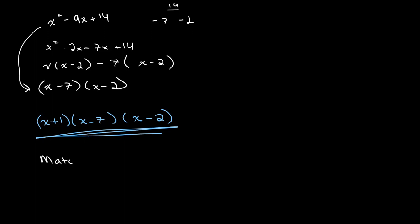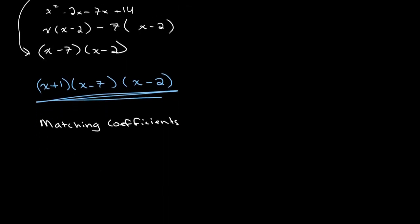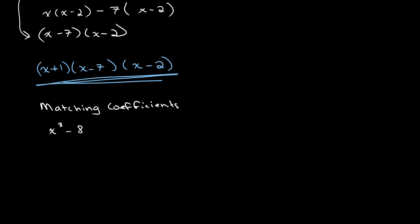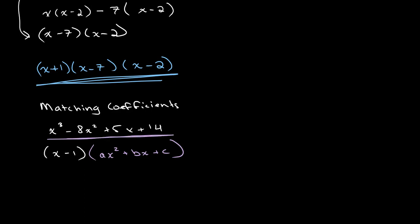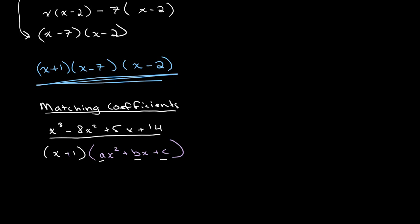Method 3 is matching coefficients. We have x³ − 8x² + 5x + 14 with known factor x + 1. We know that (x + 1) times some quadratic ax² + bx + c equals our expression. What we want to do is match the coefficients a, b, and c with the coefficients in our original equation.